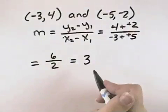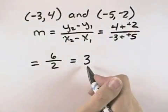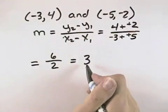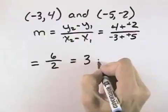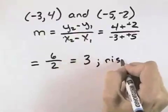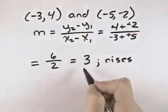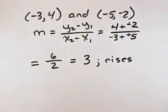So my slope for this problem is 3. And then looking at this, a positive slope would represent a rise. So for this one, the slope rises. It will rise 3 units for every 1 unit it goes to the right.